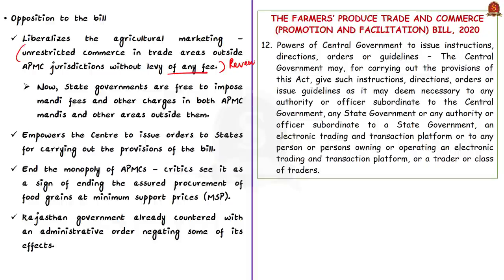This bill is strongly opposed because APMCs form the backbone of existing trading arrangements. What states oppose is the unrestricted commerce in trade areas outside APMC jurisdictions without levy of any fee, because it is a source of revenue for the state governments. A portion of revenue will be lost by passing this bill. The bill also empowers the central government to issue orders to states for carrying out its provisions, which has agitated state governments. These measures effectively end the monopoly of APMCs, viewed by critics as a sign of ending the assured procurement of food grains at Minimum Support Prices. The Rajasthan government countered this bill with an administrative order declaring FCI and warehousing corporation premises as procurement centers under the state APMC Act.